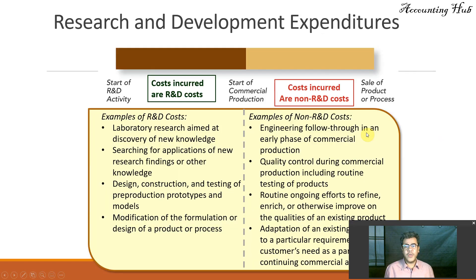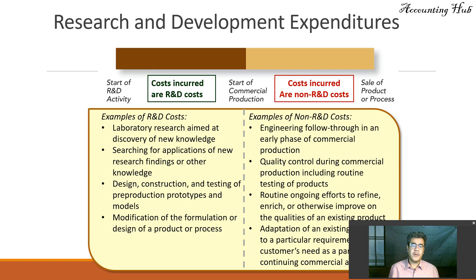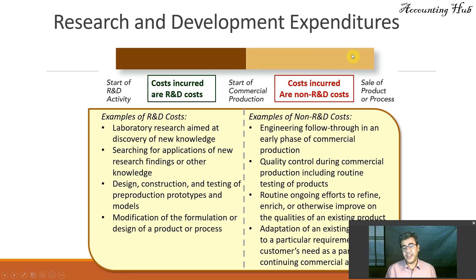So what do we have here? Everything from the start of R&D activity until the start of commercial production — they are R&D costs. Everything after that, they are non-R&D costs and they are regular operating expenses or cost of goods sold.